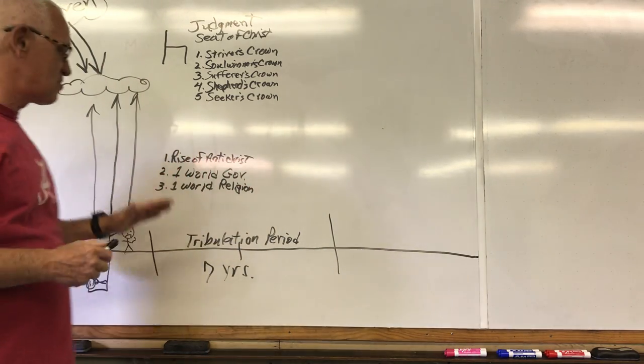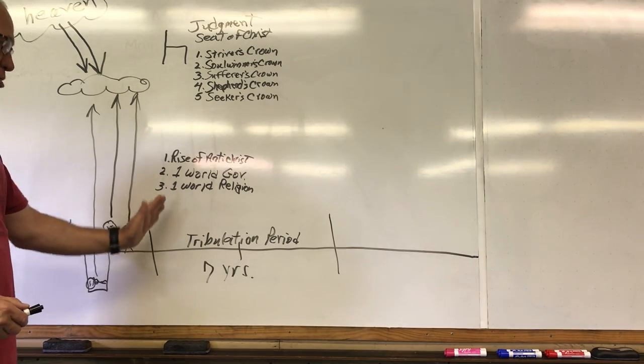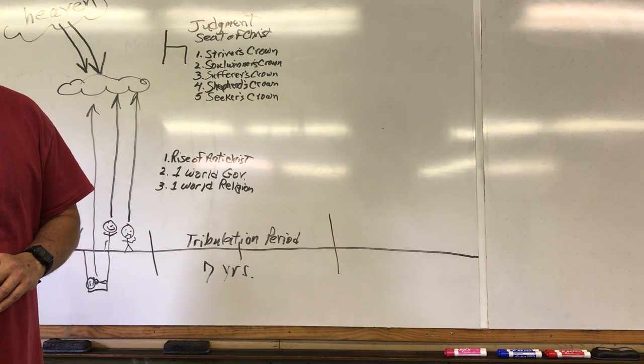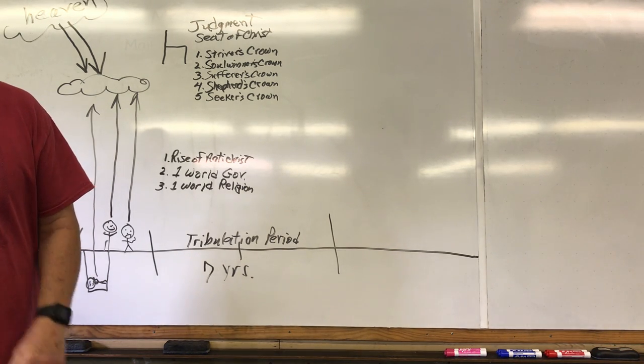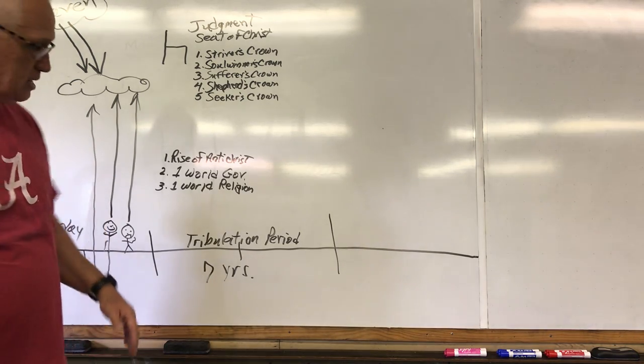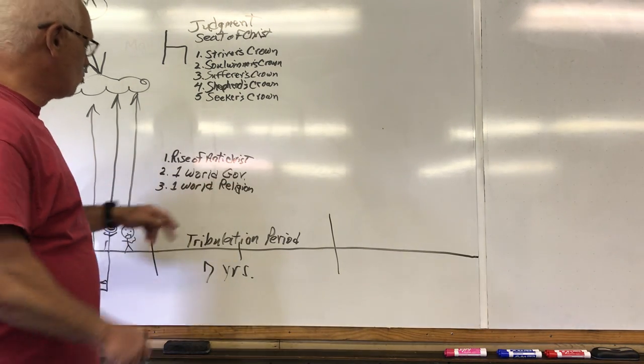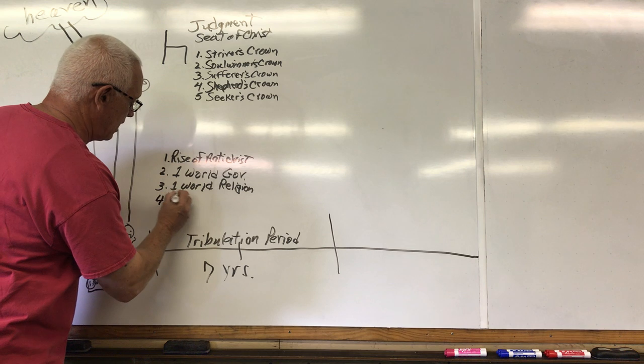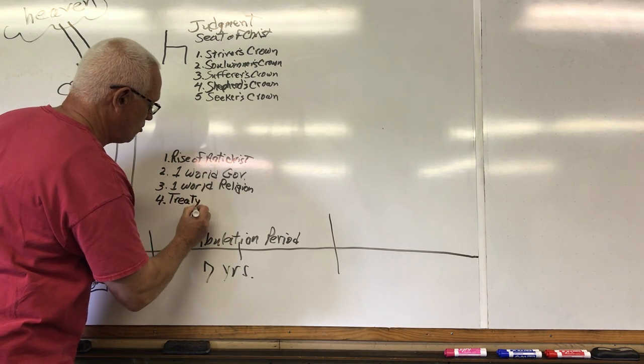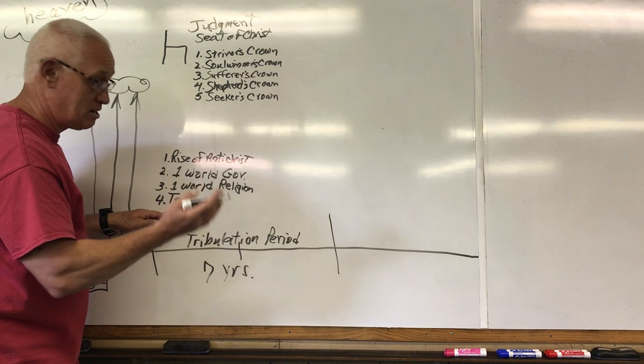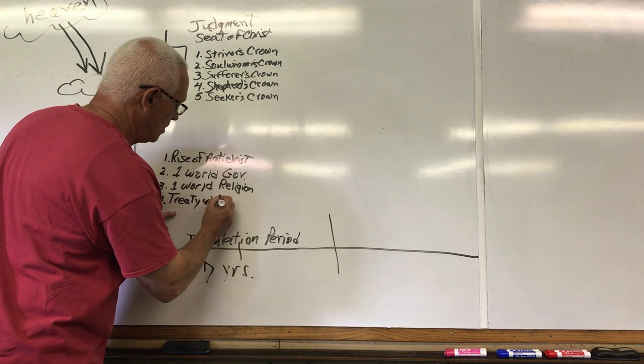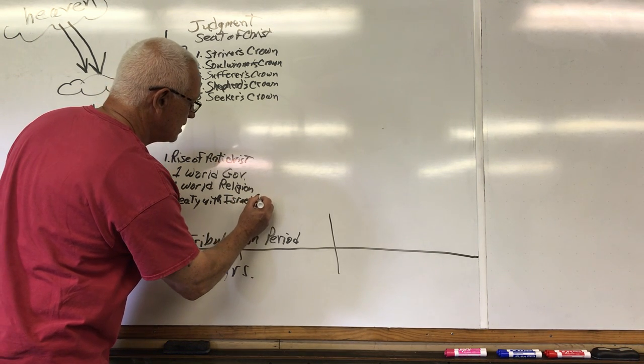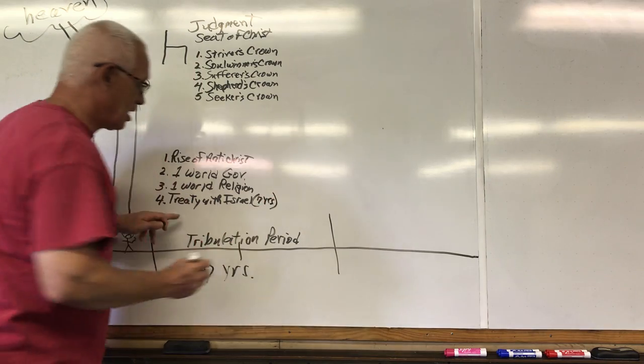So these will be some things that will be happening at the very beginning of this tribulation period. And I'm trying to keep this in basic order the way that your sheets are here. So one thing, you'll have the rise of the Antichrist, one world religion, one world government. How about this? You will have a treaty. The Antichrist, this is very important, will confirm a treaty, a covenant, a treaty with Israel, the nation Israel, for seven years. That's seven years. He's not going to keep it.